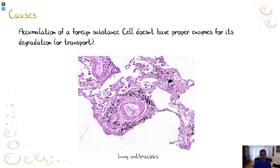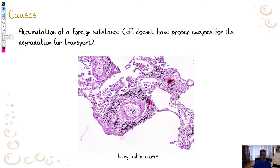Sometimes it can be accumulation of a foreign substance. Again, there is nothing wrong with the cell, but the cell stores some foreign substance and does not have proper enzymes for its degradation or transport. A typical example is lung anthracosis — anthracosis is the deposition of coal dust in the lungs. It is very common; basically all of us have some degree of anthracosis. It can be apparent microscopically and also macroscopically as a black pigmentation in macrophages. There is nothing wrong with the macrophages — they simply cannot metabolize such a foreign substance.